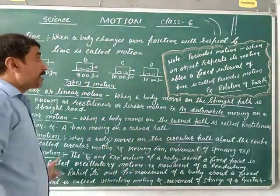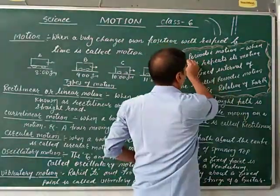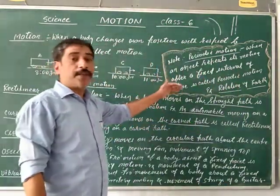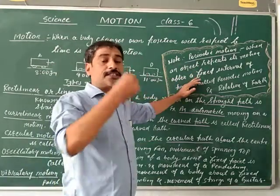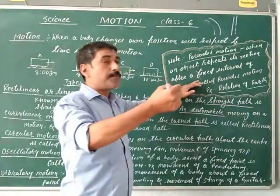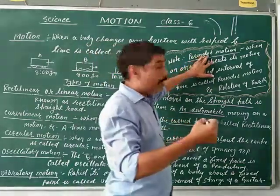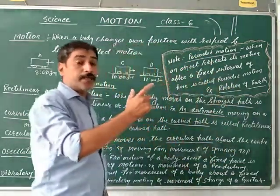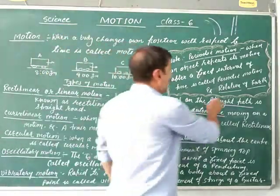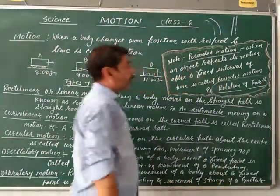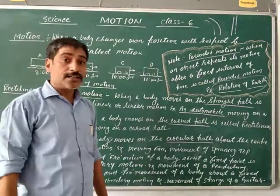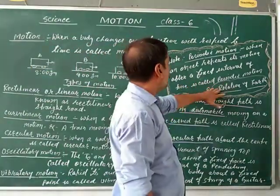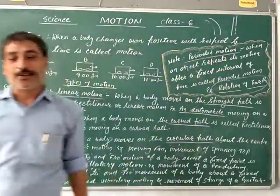Next is periodic motion. Periodic motion means when a body repeats its motion after a fixed interval of time. If at a fixed interval of time you repeat such type of motion, you know it as periodic motion. Okay, thank you.